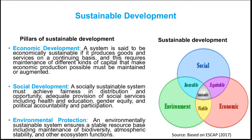The intersection between environment and economic development is described as viable — what we call green development. Green development means that any economic development must take into account environmental issues. Importantly, green development does not necessarily mean inclusive development, and inclusive development does not necessarily lead to green development. So for sustainable development to happen, we need both green development and inclusive development, as well as caring capacity of the environment. Sustainable development sits at the intersection of all three dimensions — at the center of the Venn diagram.